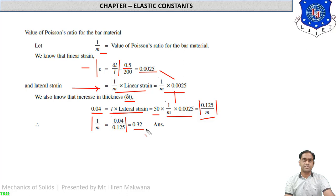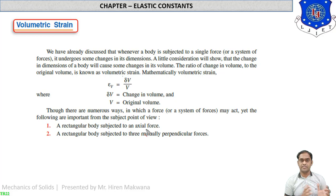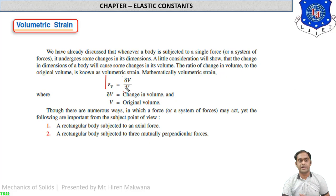These are numericals based on linear strain, lateral strain, and Poisson's ratio — we can find missing values or changes in length, thickness, width, or diameter. Now let us move ahead to the next topic: volumetric strain. When a body is subjected to force, the ratio of change in volume to original volume is known as volumetric strain: epsilon-v equals delta-v by v.